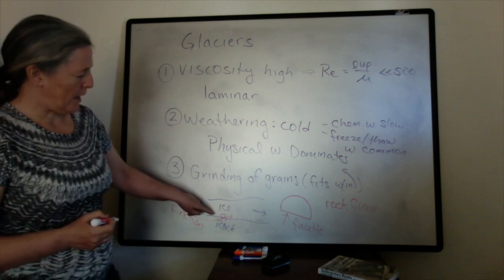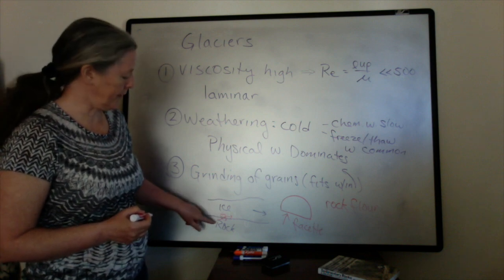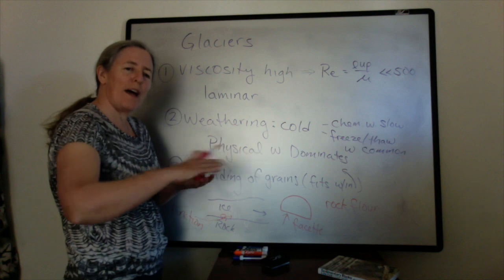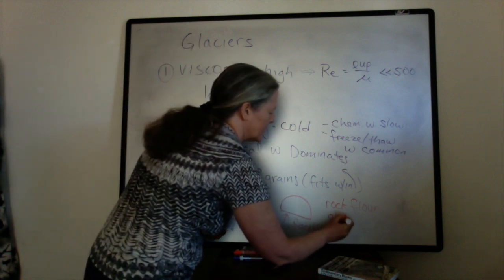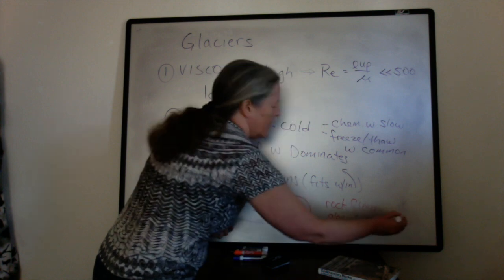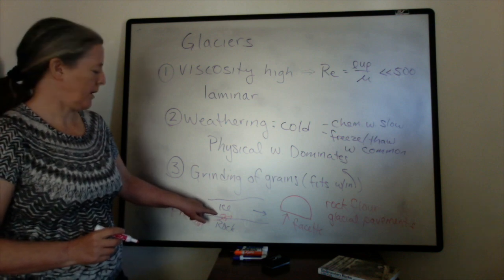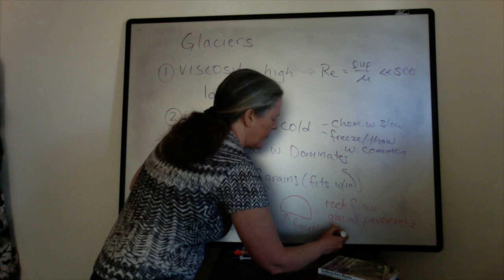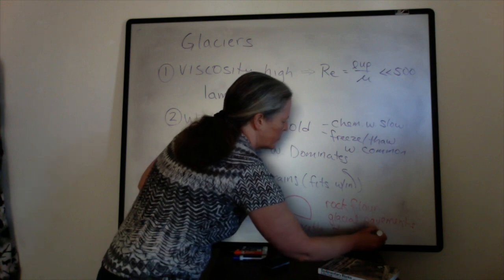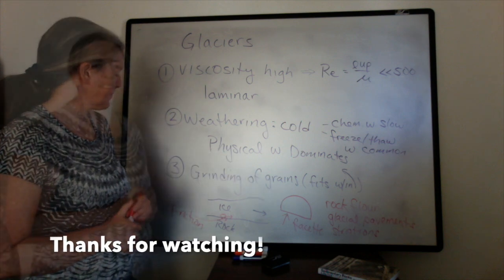As these rocks scratch the bedrock, the rocks they grind over also get smoothed out to the point it's flat like pavement — so we call these glacial pavements. Sometimes there are weaknesses in the rock below, or a particularly hard rock above, and they often have grooves or striations. Those striations appear on the glacial pavement and can also be on the faceted clasts.